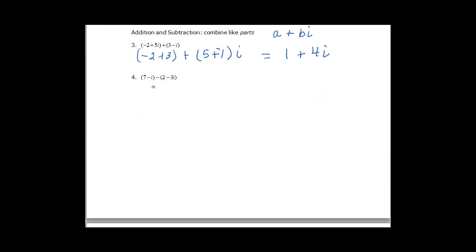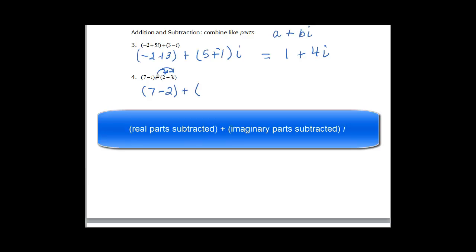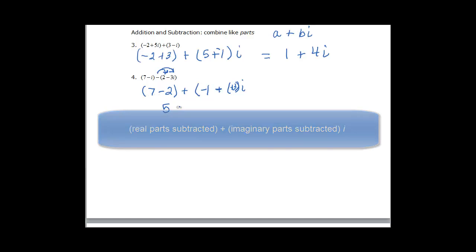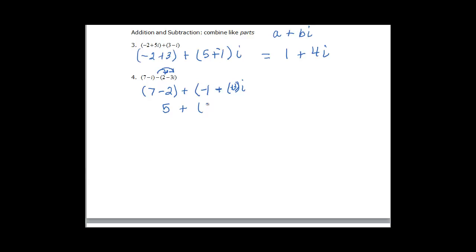For subtraction, we just need to distribute that negative. We have 7 minus 2, and then plus negative 1 for the i coefficient, minus negative 3. Well, minus and negative 3 gives us plus 3. So 7 minus 2 is 5, plus negative 1 plus 3 gives us 2i, or we can just write it as 5 plus 2i.